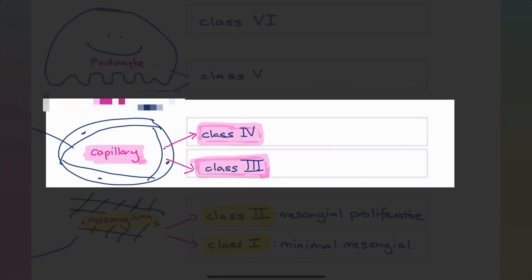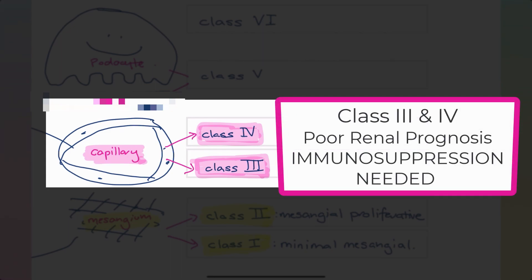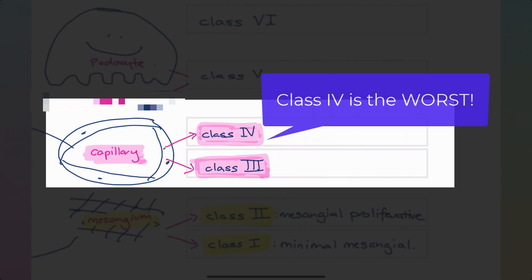Now coming on to class three and four lupus, these are the ones to watch out for. These always, always, always warrant treatment. And that is because they involve the capillaries. If left untreated, they're associated with a very poor renal prognosis, especially class four. Class four is the absolute worst. We need to get on top of class four ASAP.